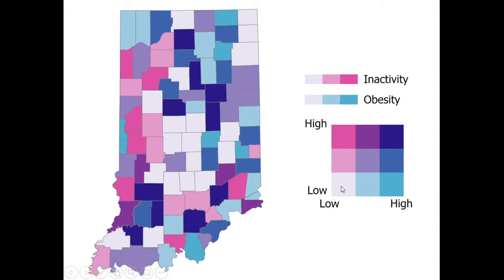So what we can do is combine those two. We see going low to high obesity and low to high inactivity. High-high means they're very obese and very inactive — those will be the darker blues. One thing you'll notice is if we get too many classes, this creates huge numbers of boxes and colors. You typically want to keep it simple with just a few classes, but essentially using color we can see the interplay of two different variables.